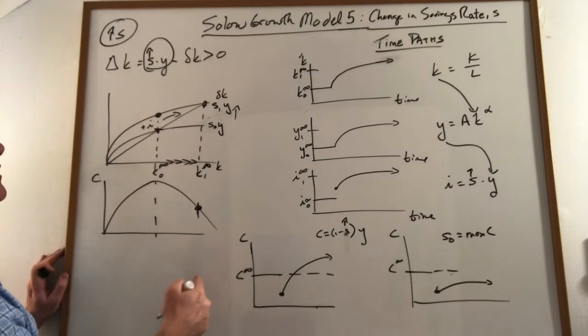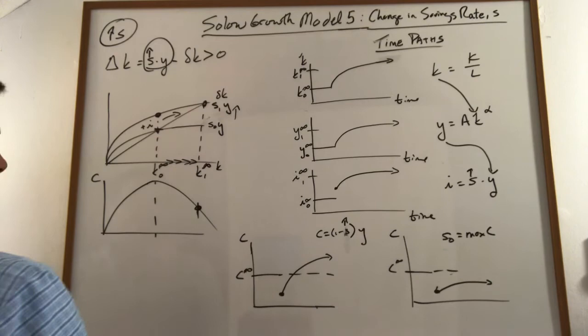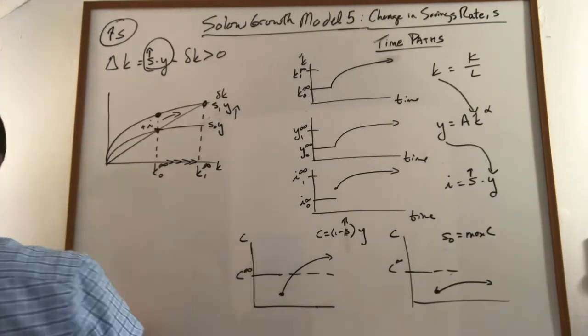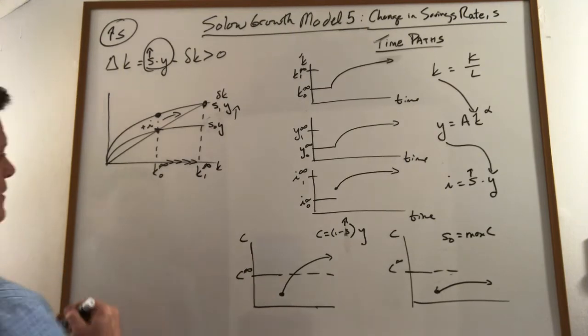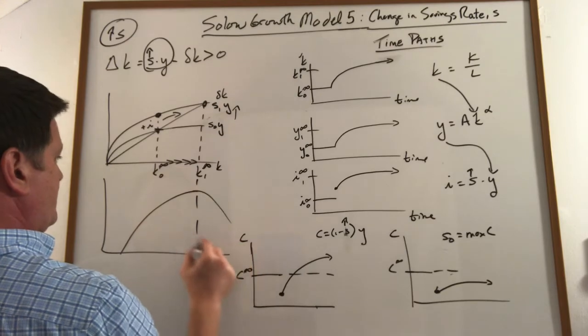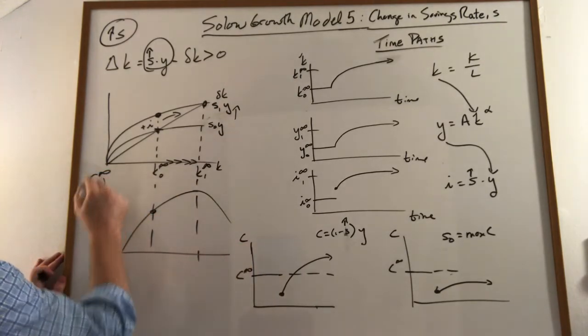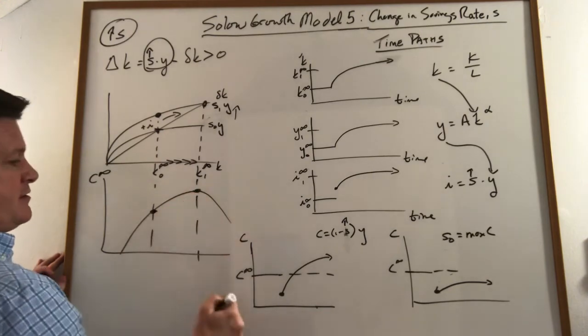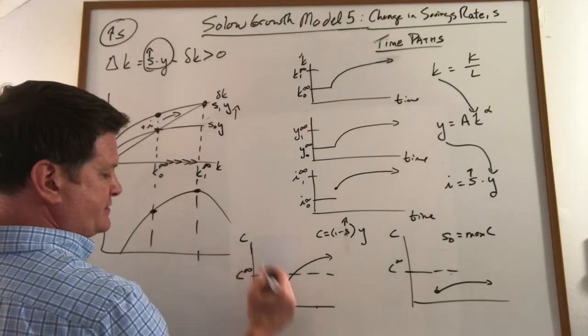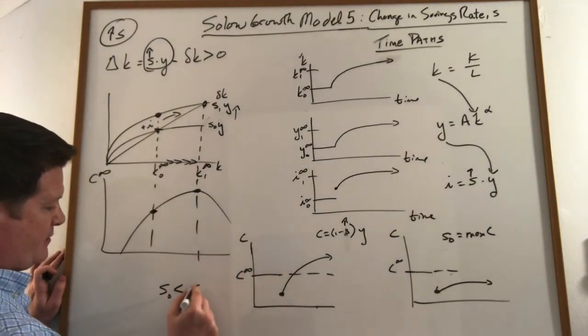So if the initial savings rate was not, maybe this is, then consumption, steady state consumption was here and now it's here and we're in this. So where this would be the case, where S naught was less than S.